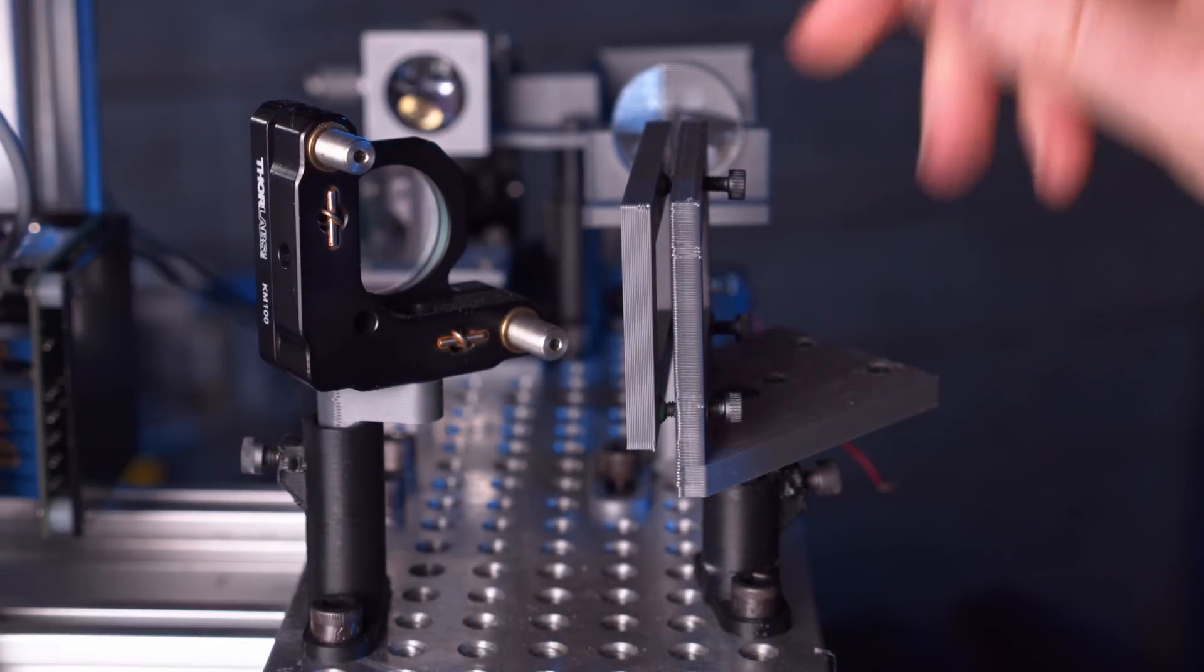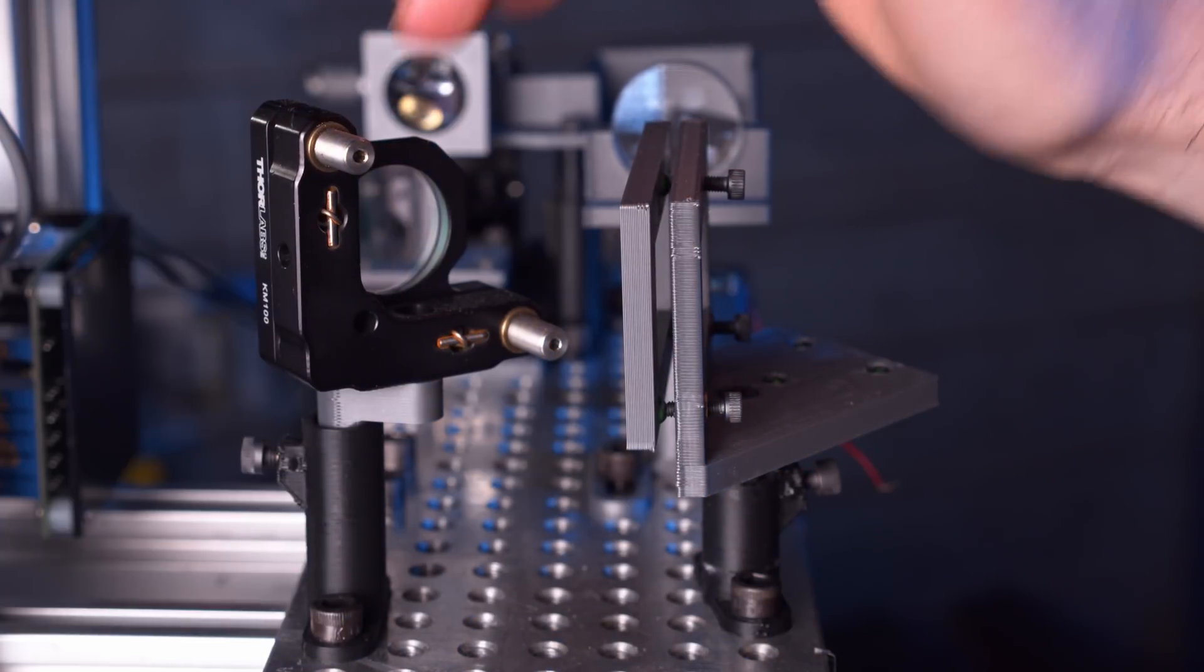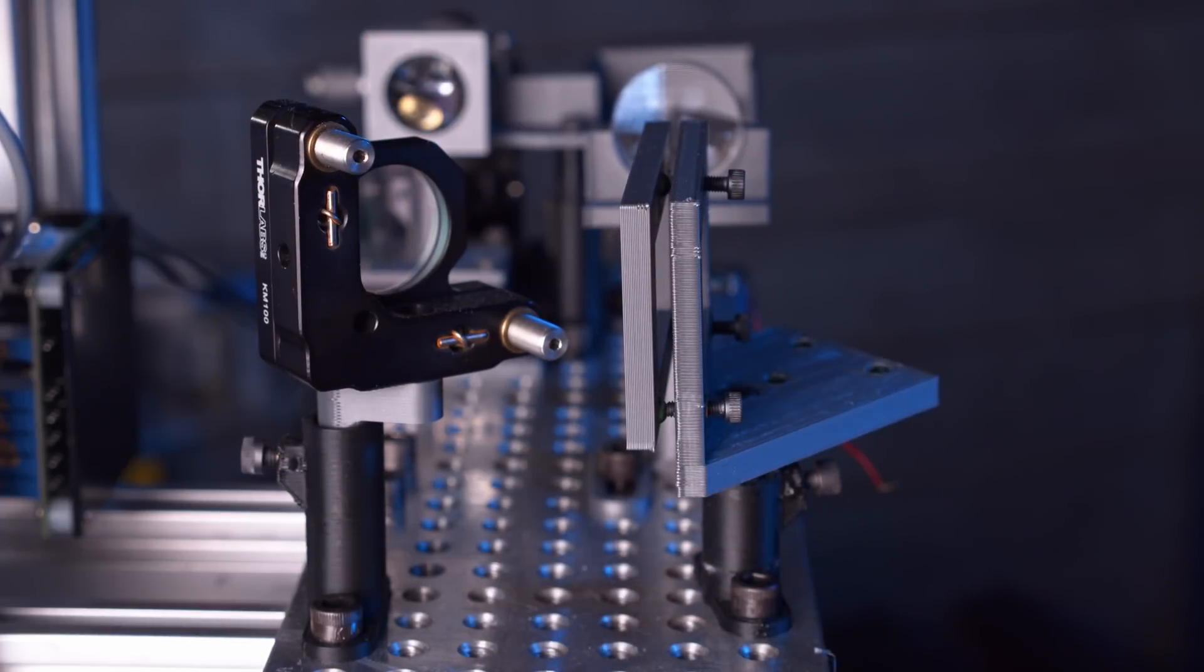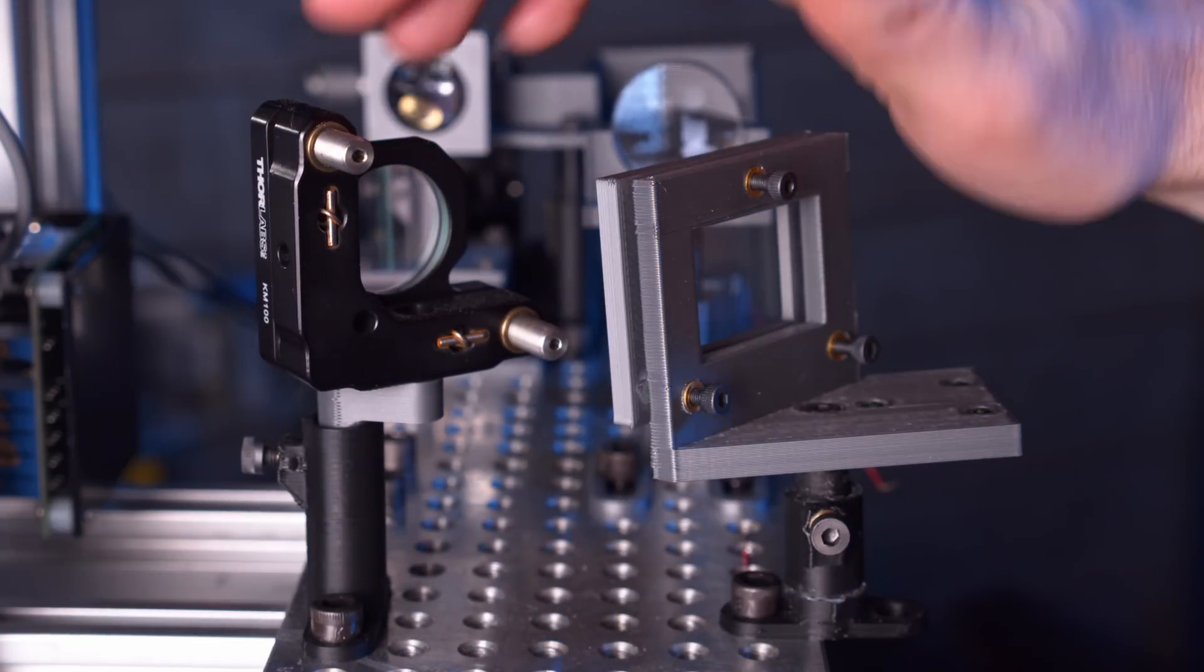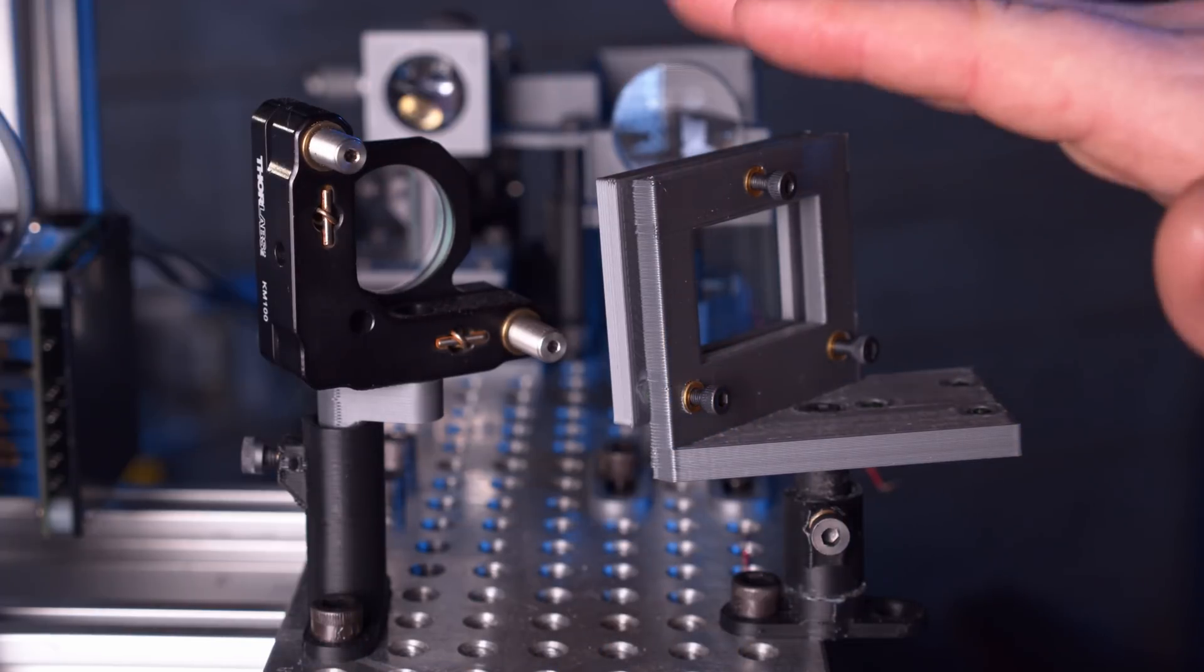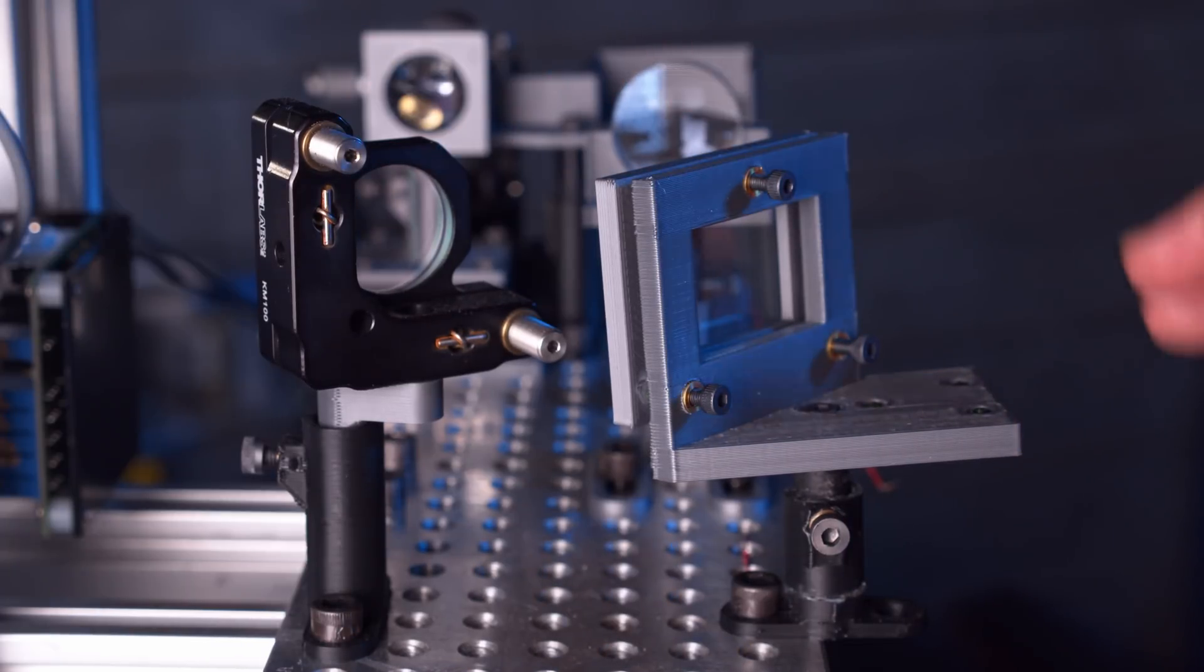So functionally, it's the same as this kinematic mount, just 3D printed. So if I didn't have this nice commercial Thor Labs, I wouldn't have had any problem using this, this would have gotten the job done perfectly. Obviously, the dimensions would have been different, I would have had to print a custom holder for a mirror of the size, but that's just details.